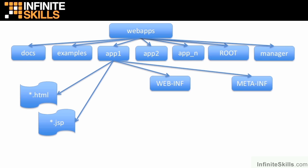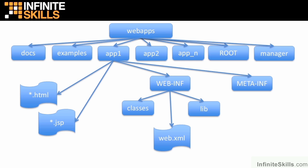Under each application folder, we need to at minimum have a web-INF folder and the view pages we're going to use. HTML pages and JSP pages have to be at the top level in the application folder. Additionally, if you have scripts and CSS, you would have those folders here with their appropriate files. Under the web-INF folder, we have our web.xml at the top level, and then two other folders: classes and lib. The classes folder is where we put our source code, and lib is where we put any library references we need.